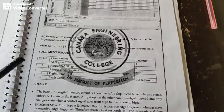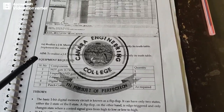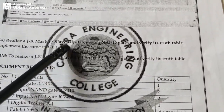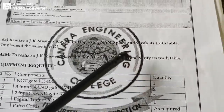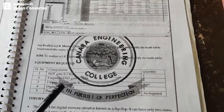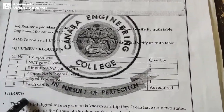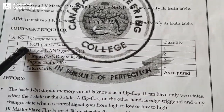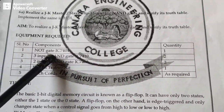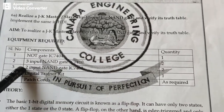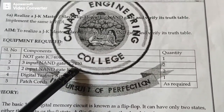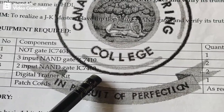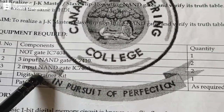Hello students, welcome to the AD lab. Today we will see the realization of JK master-slave flip-flop using NAND gates and verify its truth table. The components required are: NOT gate IC 7404, three-input NAND gate 7410, two-input NAND gate 7400, a digital trainer kit, and patch cords.